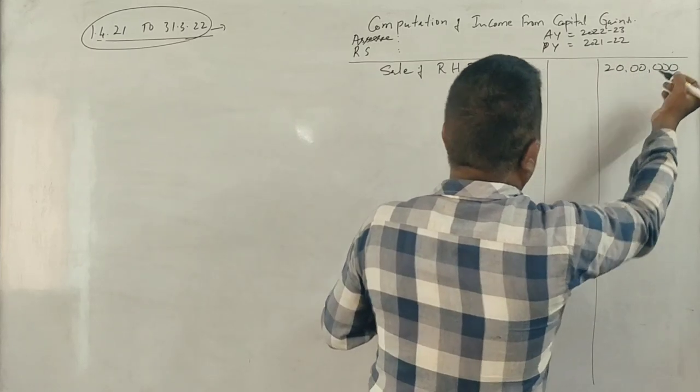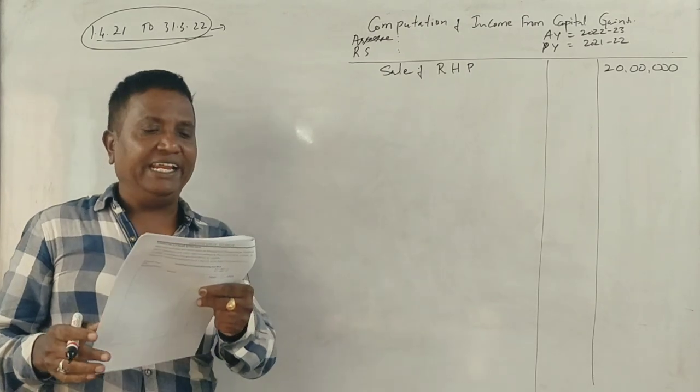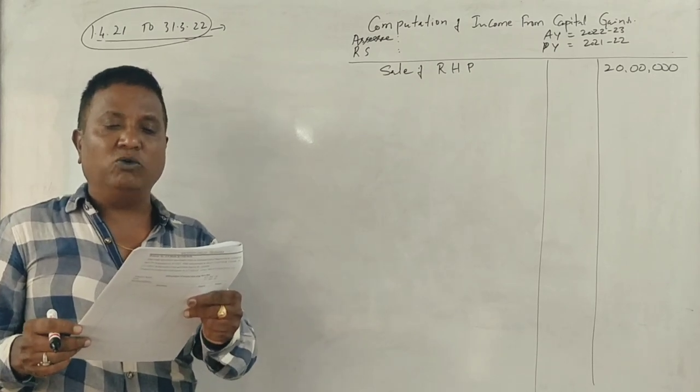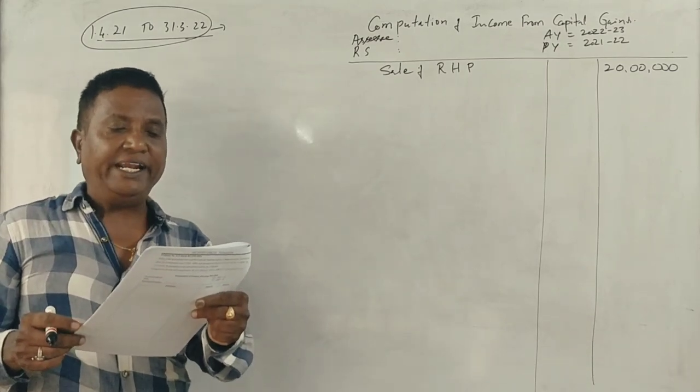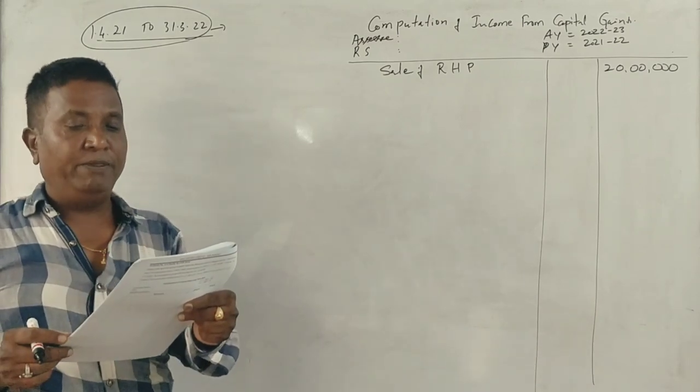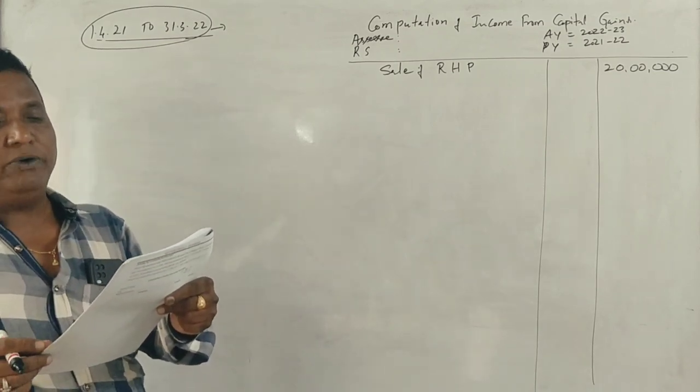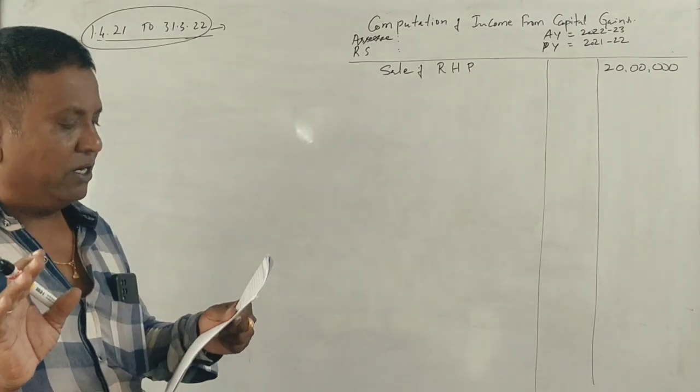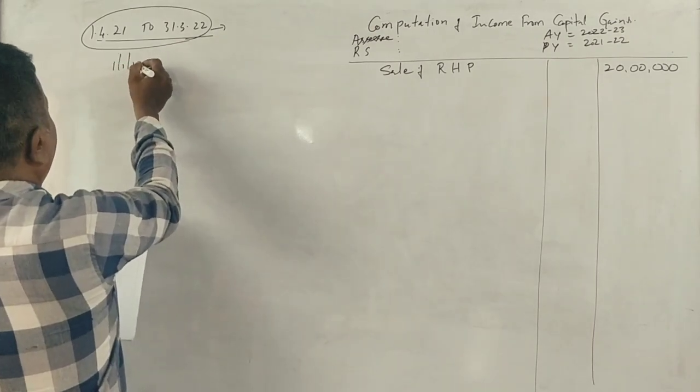The house was purchased by him on 1st January 1989 for rupees 15,000. He had made some additions to this house spending 30,000 on 15th of March 1999. Further, he added a room to this house at a cost of one lakh on 14th of November 2014.